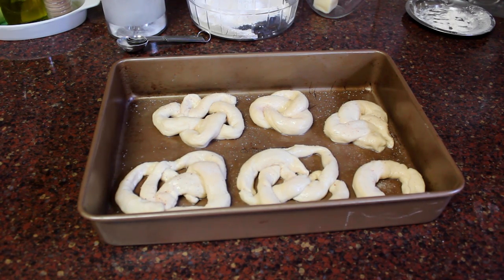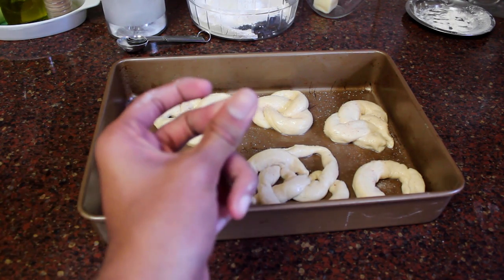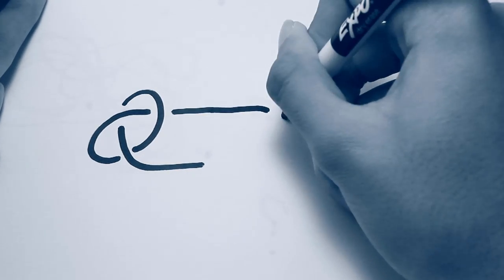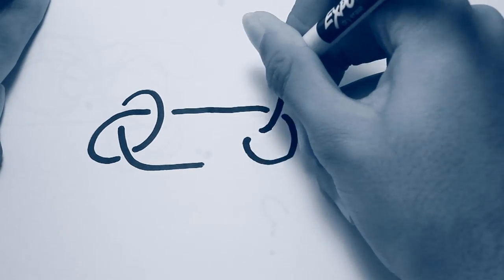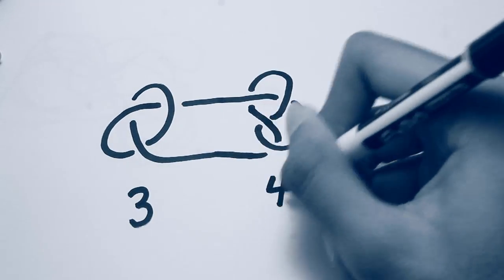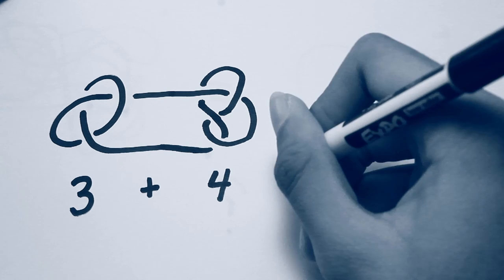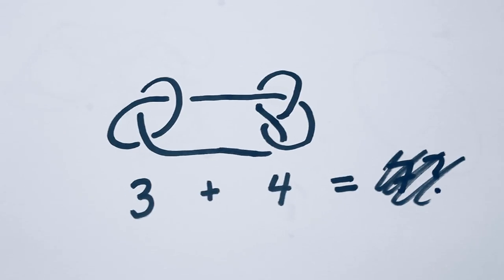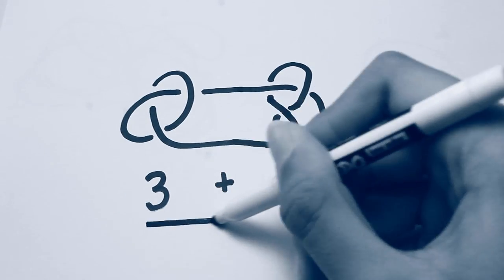Now I'm going to start putting it into the oven and hopefully it comes out pretty tasty. You can also combine knots, much like the way you can combine prime factors into a composite number — like connecting Lego bricks into a greater structure. For example, you could combine a trefoil knot and a figure-eight knot to get what's called a three-plus-four knot, a composite knot.